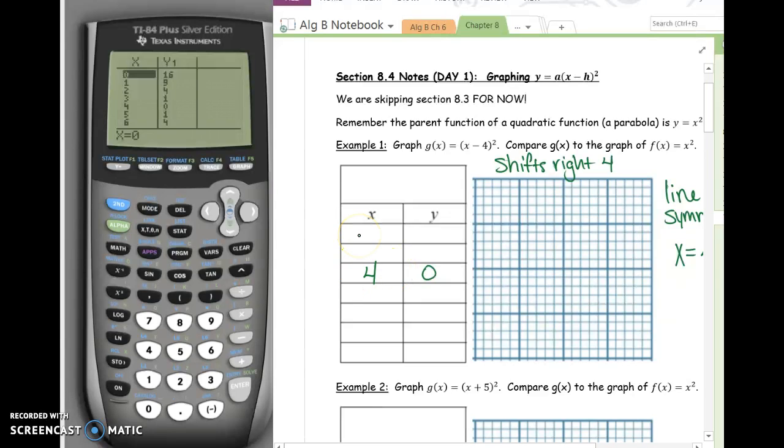So I put this down here. We can call this like the turning point or the vertex. And then using the table, above 4, 0, we have the point 3, 1. And above that, we have the point 2, 4.